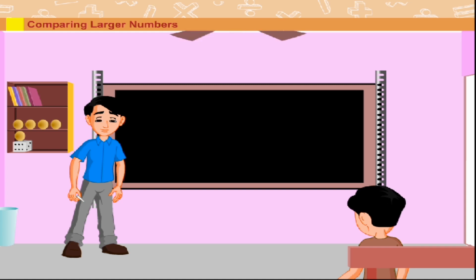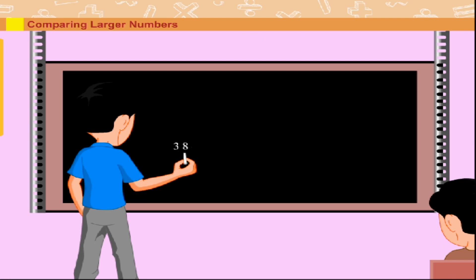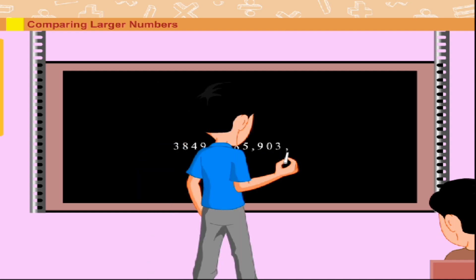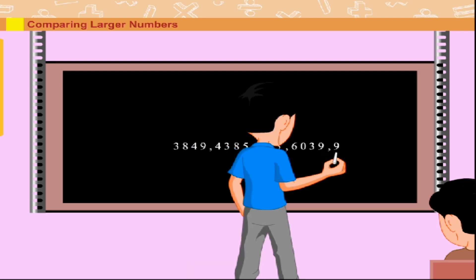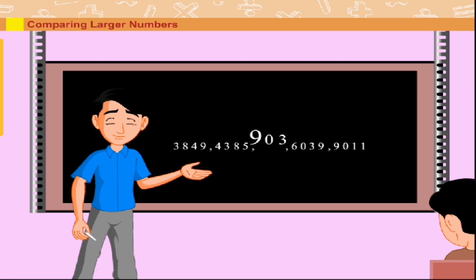Comparing larger numbers. Sumit asks Mohan to compare numbers 3849, 4385, 903, 6039 and 9011. Now, Mohan knows that the number with the least number of digits is the smallest number. As 903 has only three digits, it is clearly the smallest number.